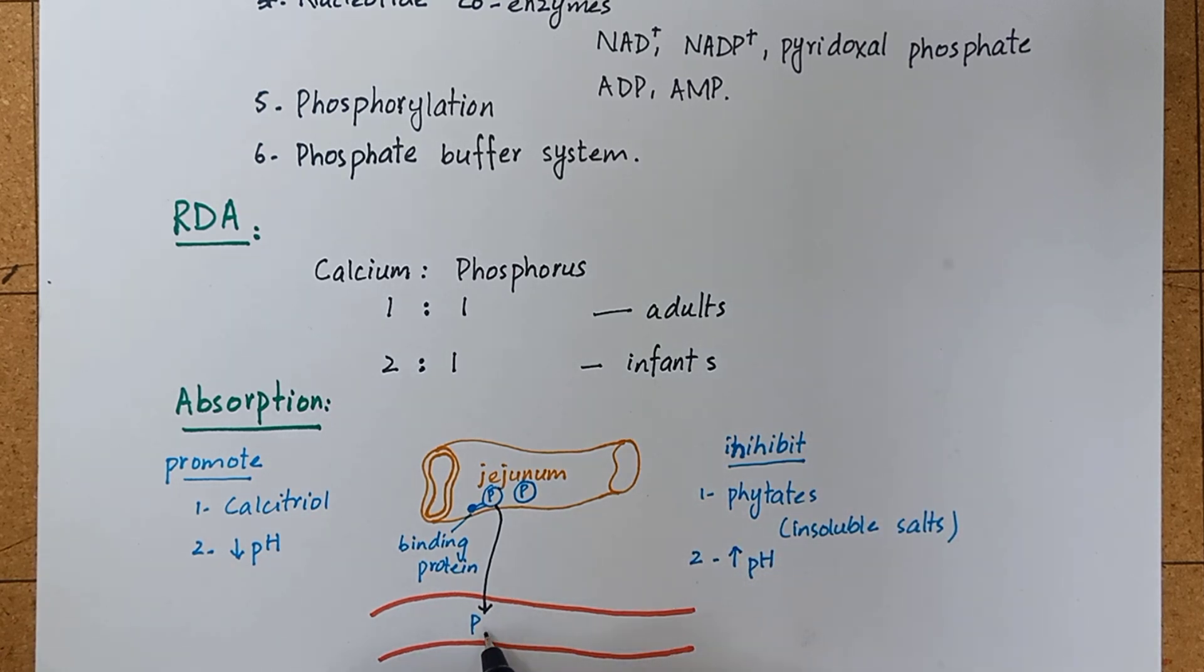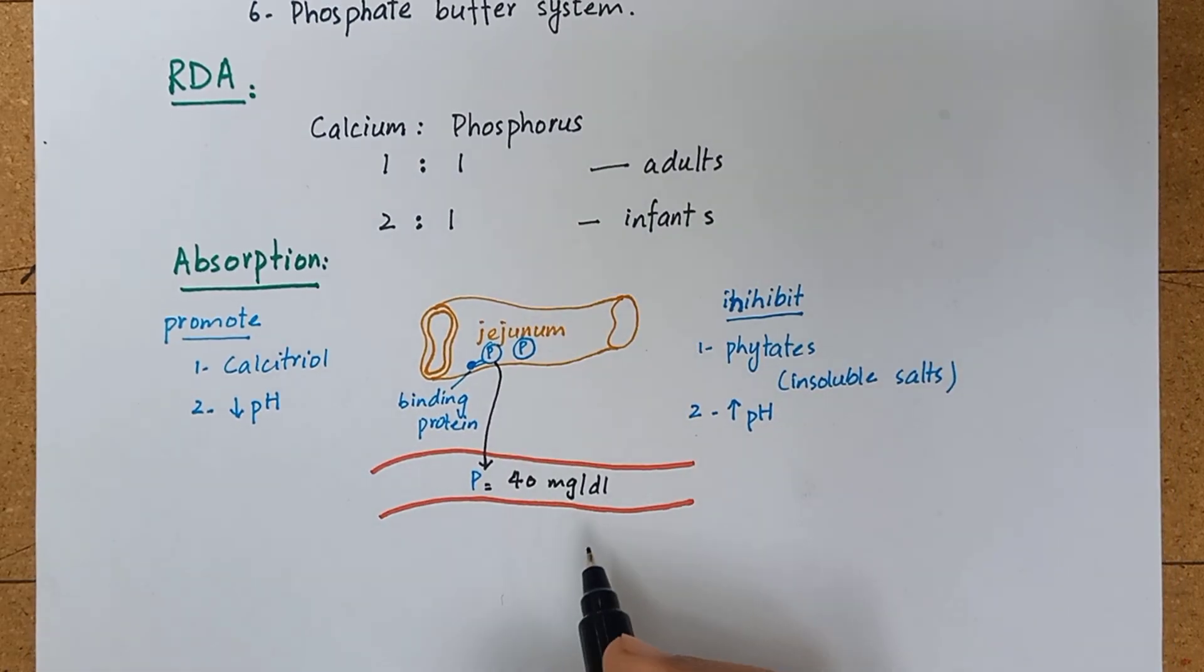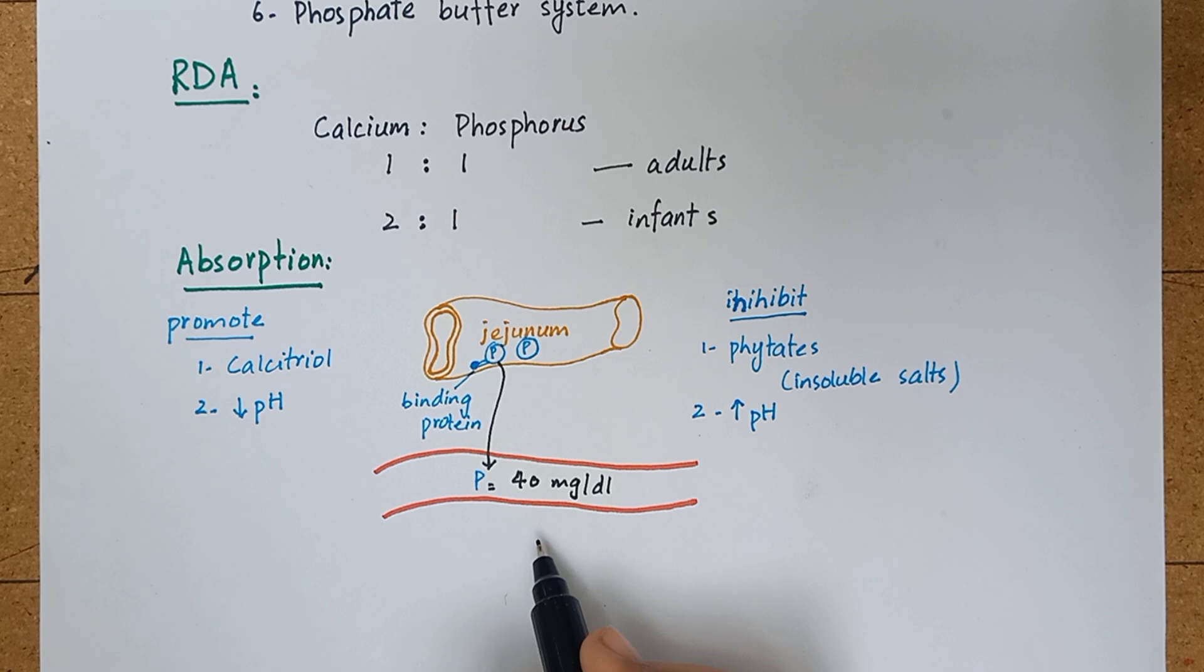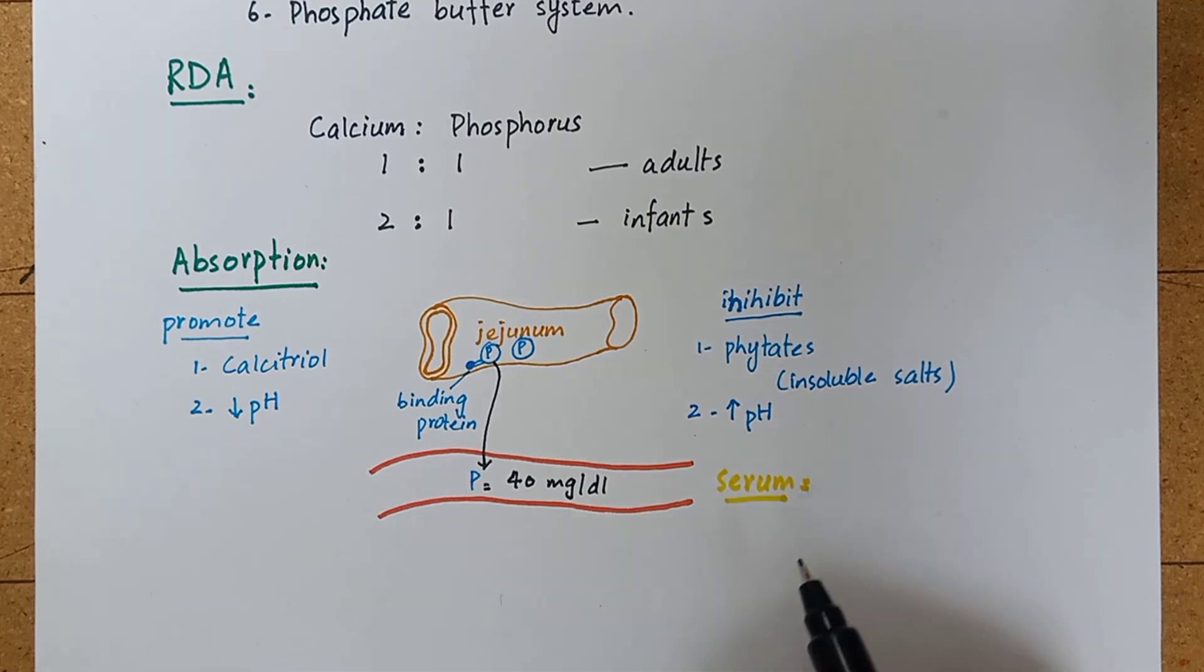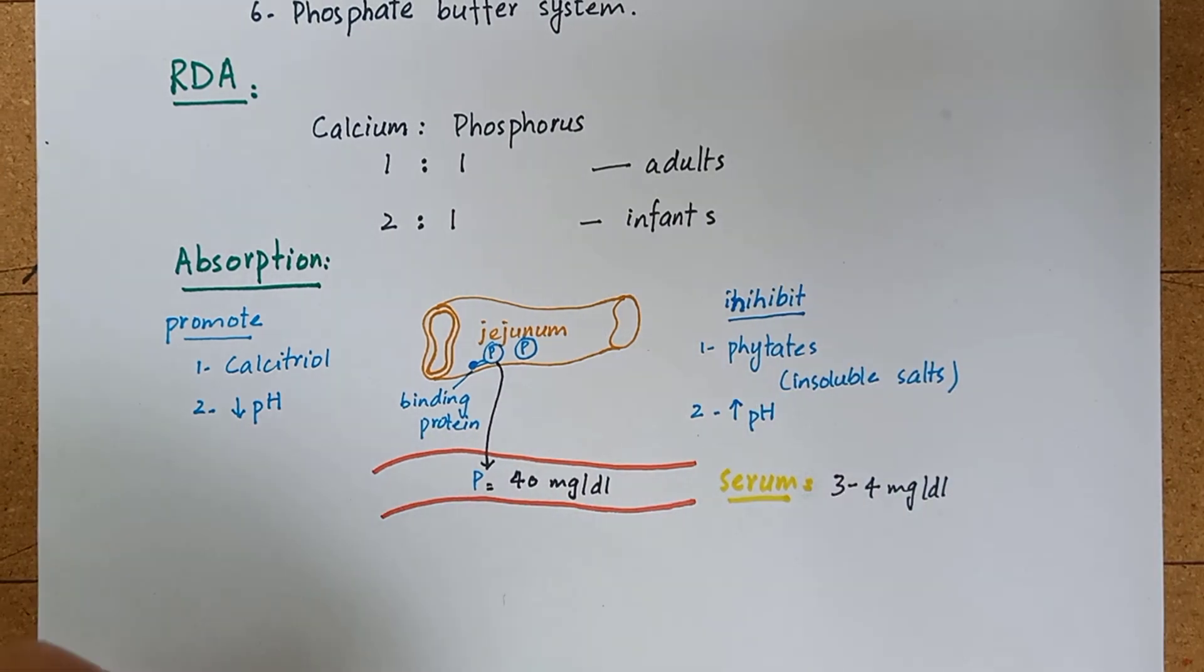The phosphate levels of whole blood is around 40 mg per deciliter. A very high percentage of this phosphorus is found in red blood cells and white blood cells. And if we remove them from the blood, the remaining serum contains only 3 to 4 mg per deciliter of phosphate.